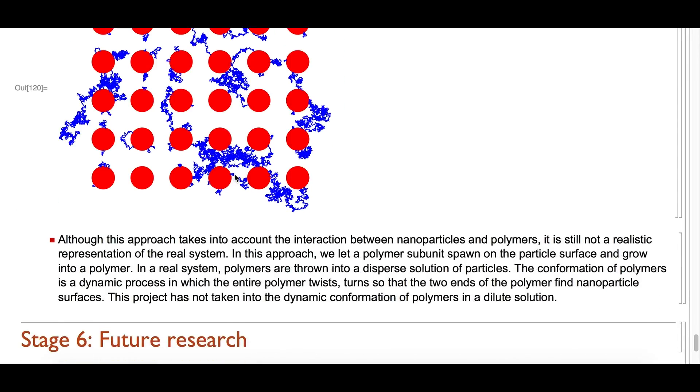Although this approach takes into account the interaction between nanoparticles and polymers, it is still not a realistic representation of a real system. In this approach, we let a polymer subunit spawn on the particle surface and grow into a polymer. In a real system, polymers are thrown into a dispersed solution of particles. The conformation of polymer is a dynamic process in which the entire polymer twists and turns so that the two ends of the polymer find nanoparticle surfaces. This project has not taken into account the dynamic conformation of polymers in a dilute solution.